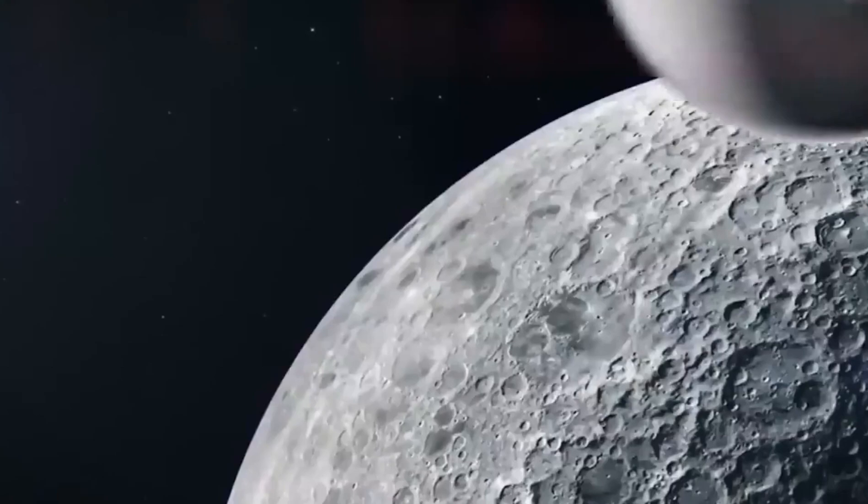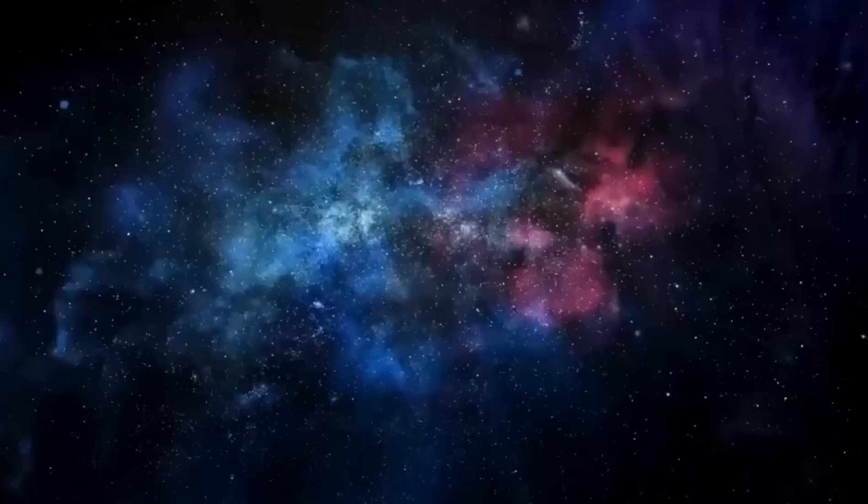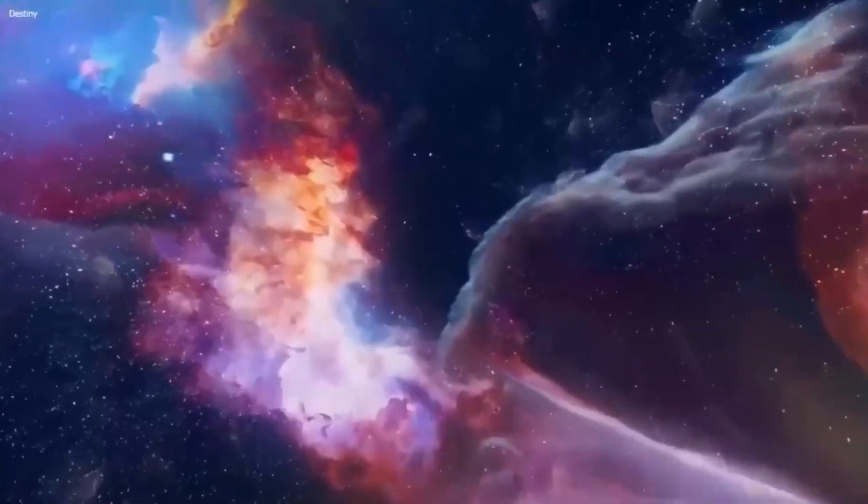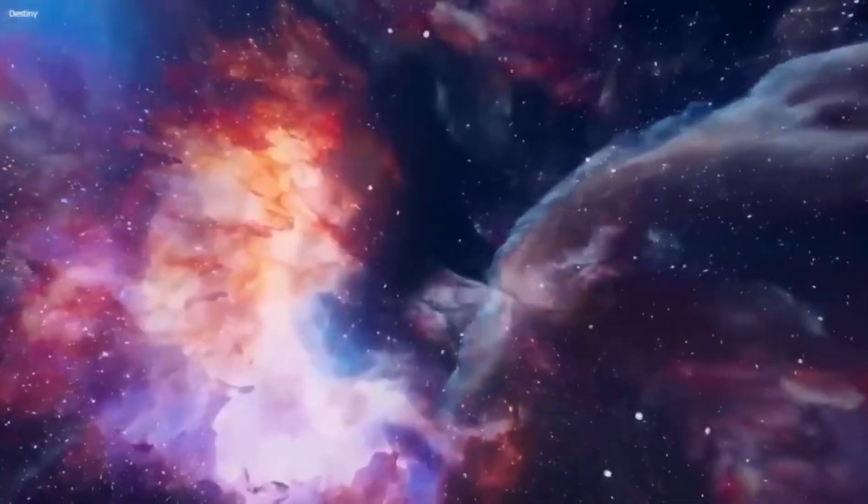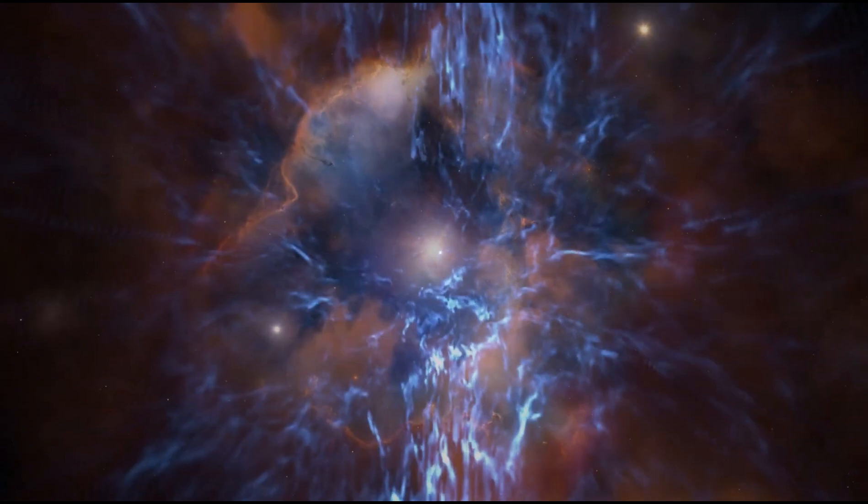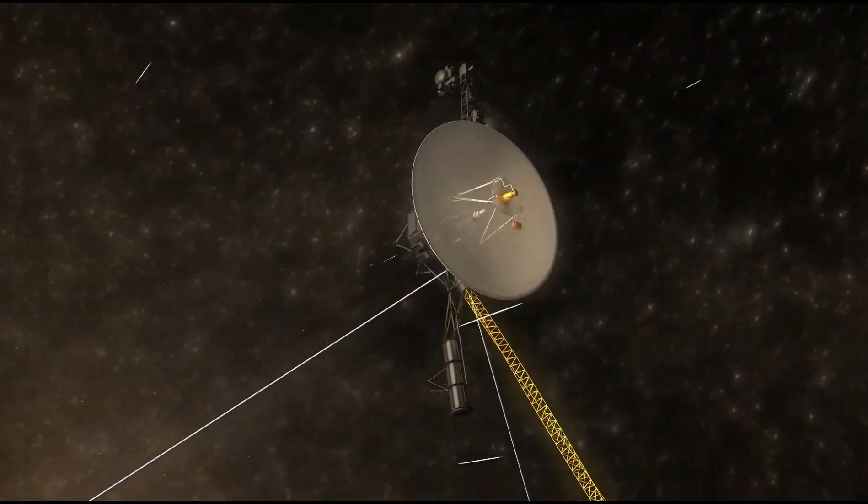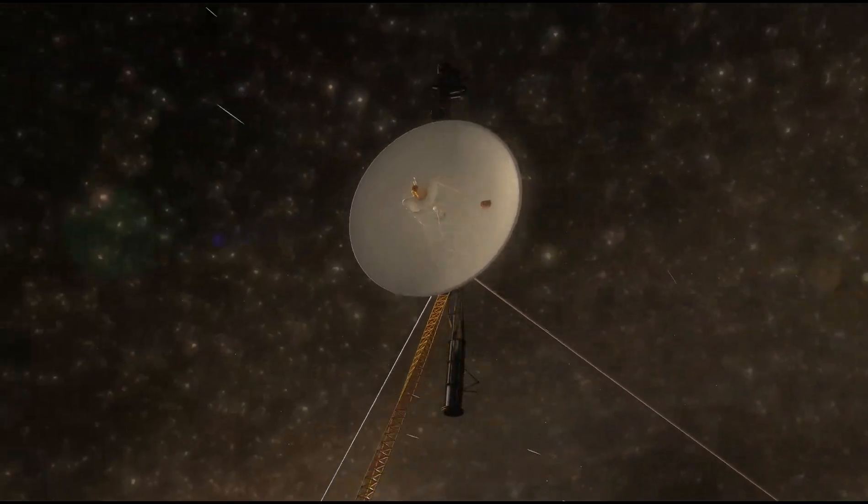Voyager 1 has been traveling for more than 45 years and is now the object created by humans that is the farthest distance from the planet, estimated to be 14 billion miles away. Despite this, light from the Voyager 1 spacecraft only needs 22 hours, 2 minutes, and 54 seconds to reach Earth. So we are still able to collect new data from the spacecraft despite its far reach into the cosmos.